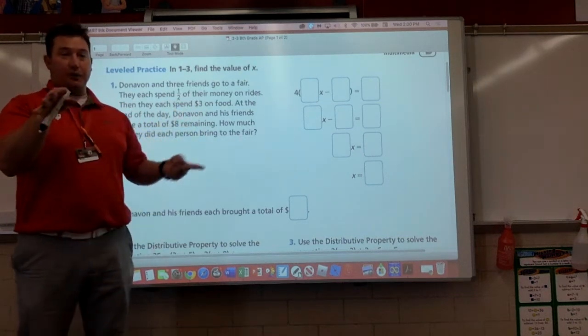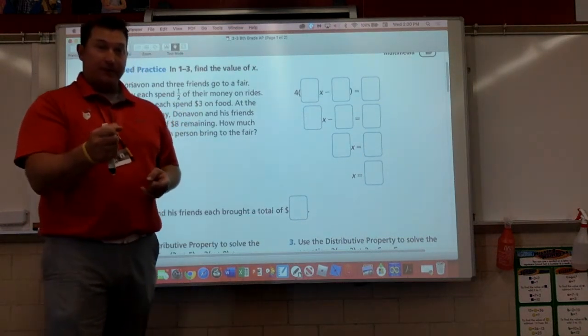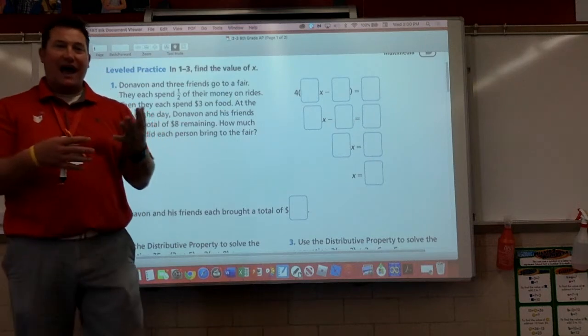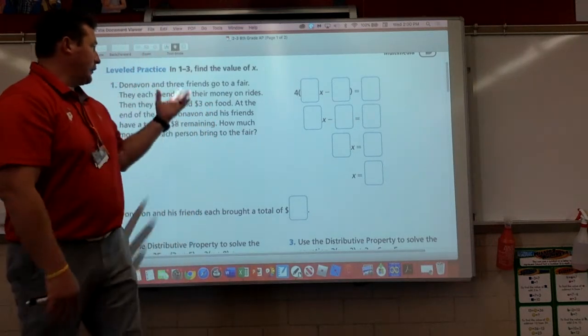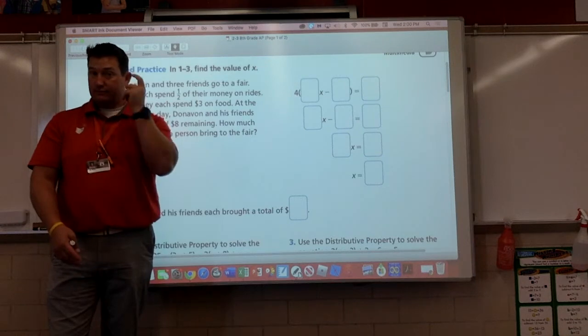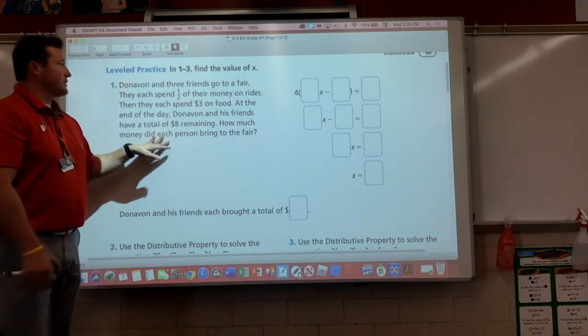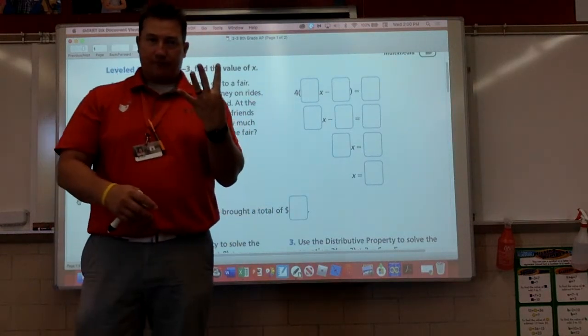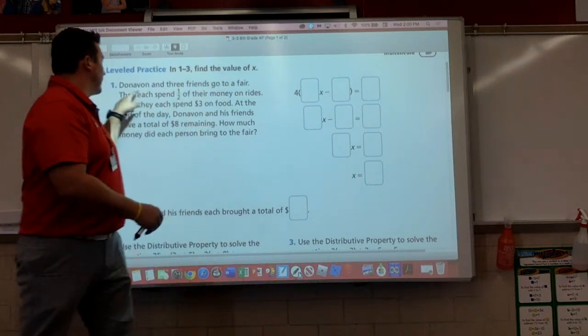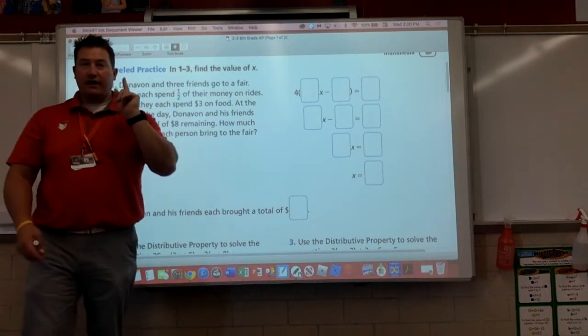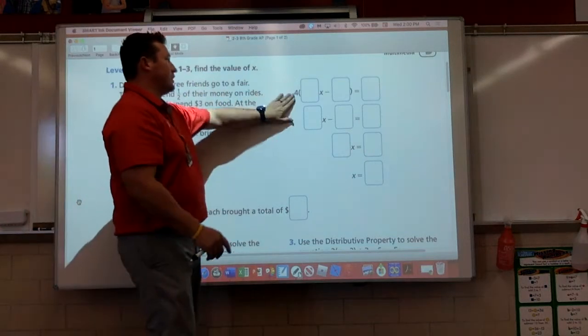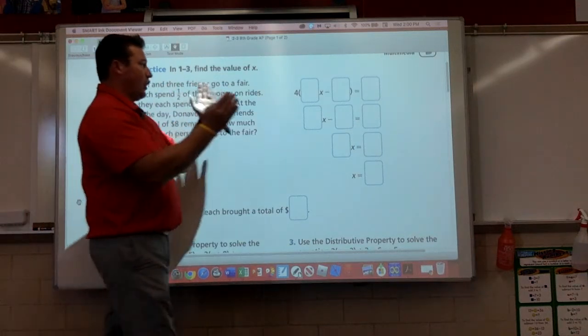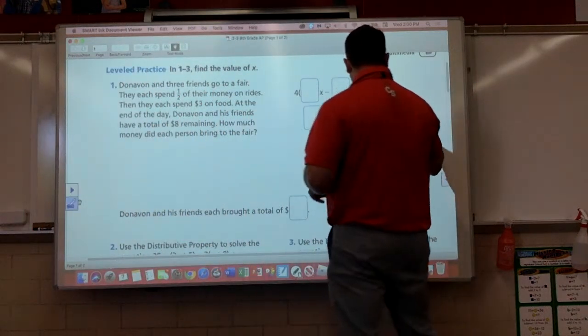Sounds like a great thing to do when you go to the fair. At the end of the day, Donovan and his friends have a total of $8 left, a grand total. All of them combined, they have $8 left. How much money did each person bring to the fair? We don't know. But what did they spend their money on? Well, they told us they bought some food, $3. We know that. That is a constant term. What we don't know is they spent half of their money on rides.